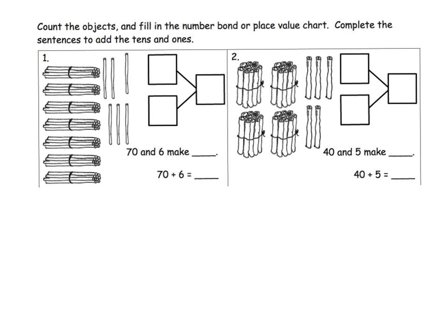So putting all that into practice, it says count the objects and fill in the number bond or place value chart. At this point we don't have a place value chart — we just have the number bonds — although I am going to show you what that place value chart might look like.